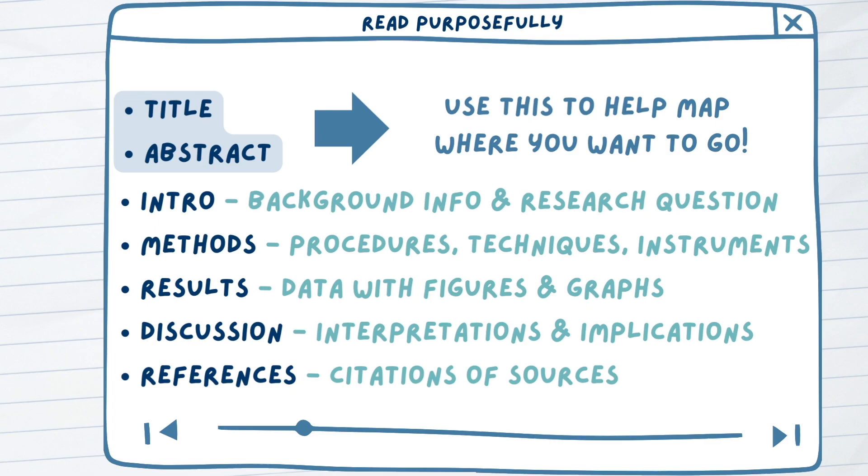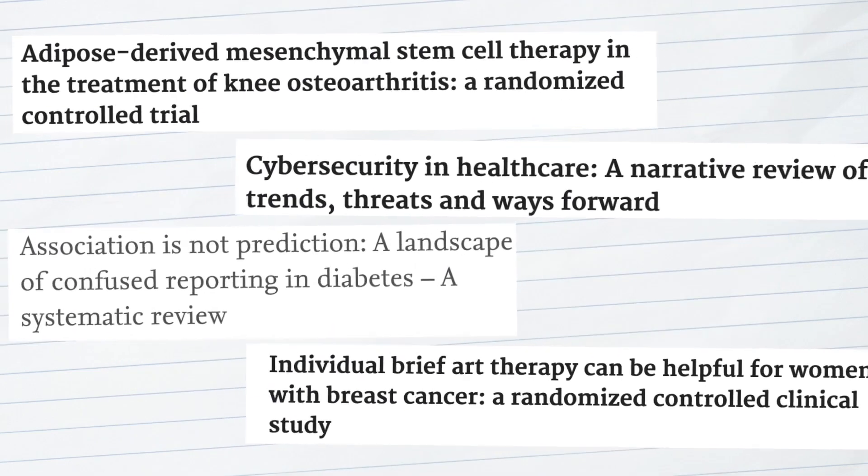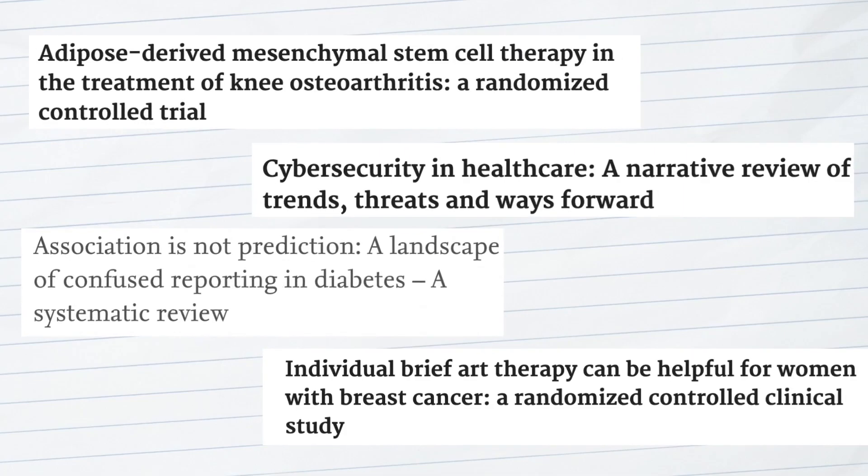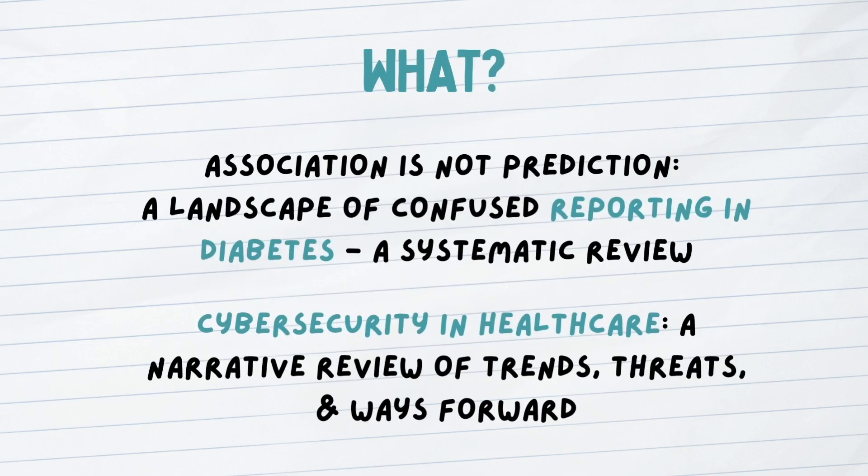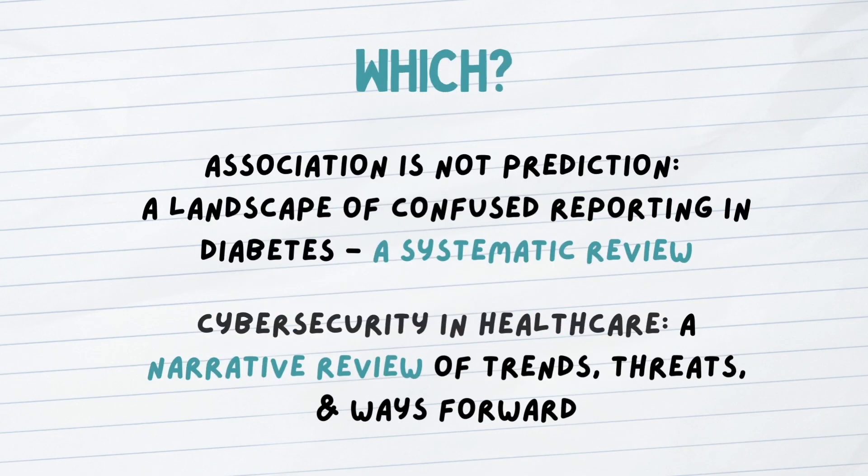This is where the title and abstract of a paper can help. You may have noticed that a lot of research articles have very detailed and verbose headings. This wordiness can actually help us when we first approach a paper of interest, with these titles acting as a one-sentence summary of the article, from what topic we are investigating to which type of research article we are reading.